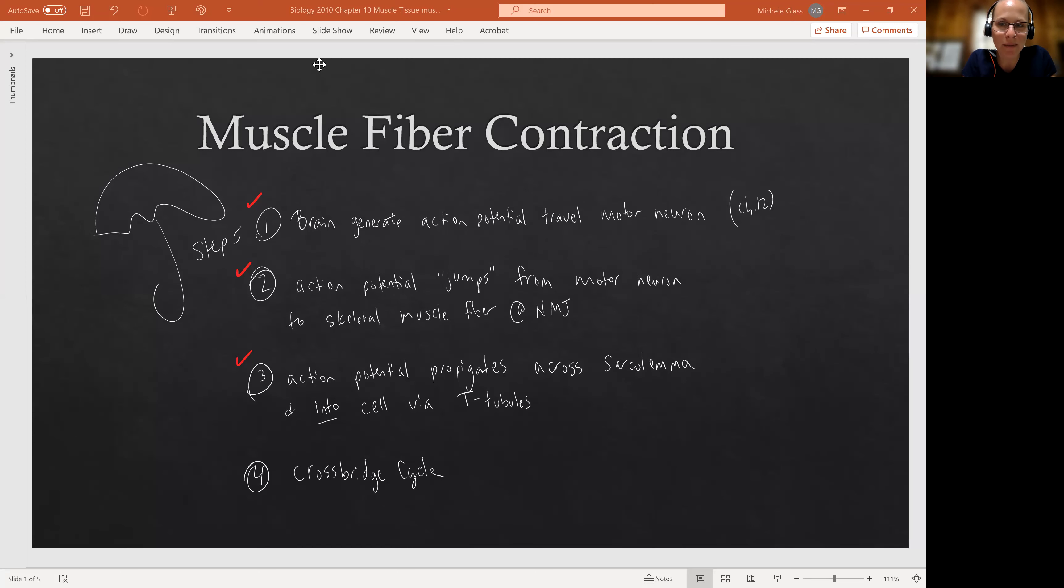Chapter 10. We've been working on muscle fiber contraction. So here's basically where we left off. These are our big umbrella steps to help guide us through. We had our big first step. We didn't go into a lot of detail here, so I'm asking you to trust me until we get to chapter 12.